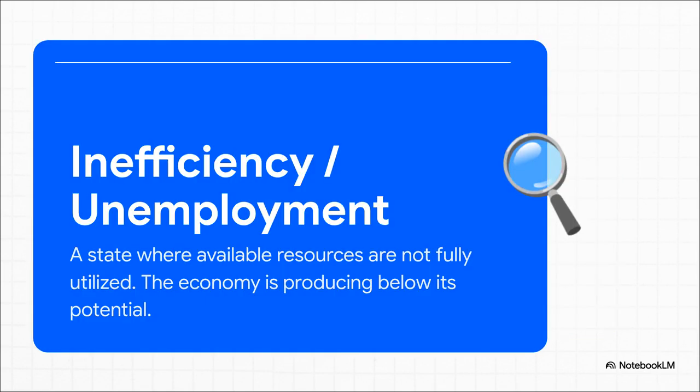Alright, so being on the curve is the goal. But you know, what happens if an economy is producing somewhere inside of it? Well, that situation represents inefficiency. And in the real world, we often see this show up as unemployment.